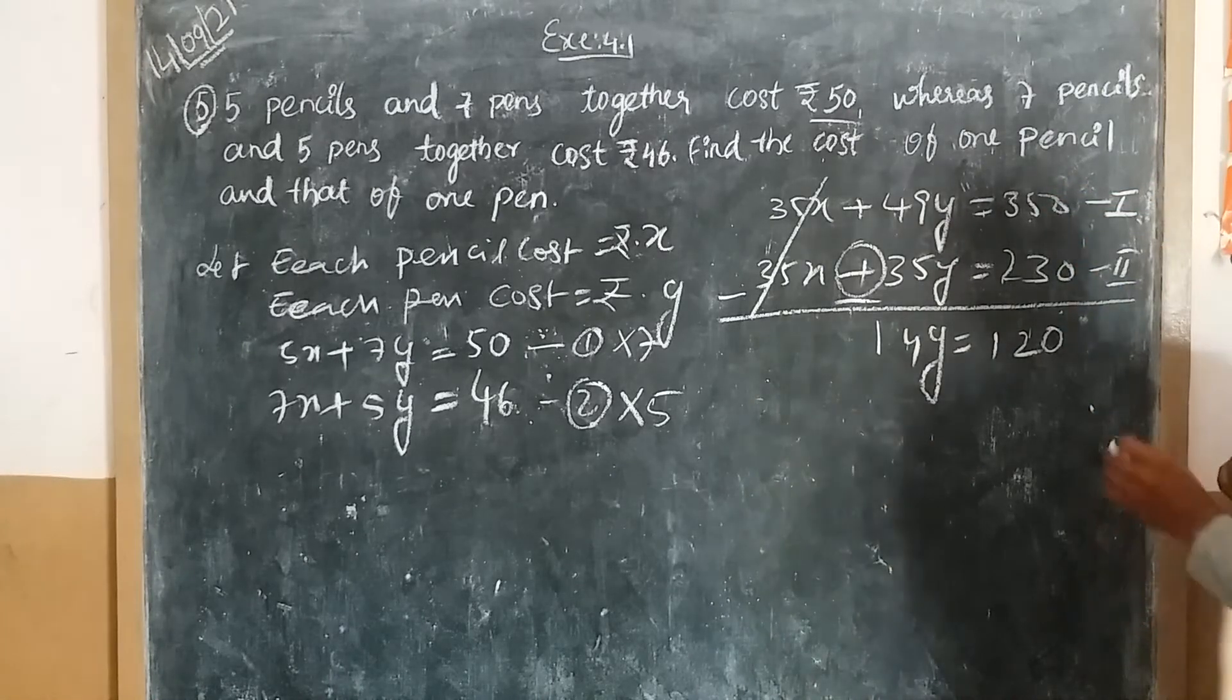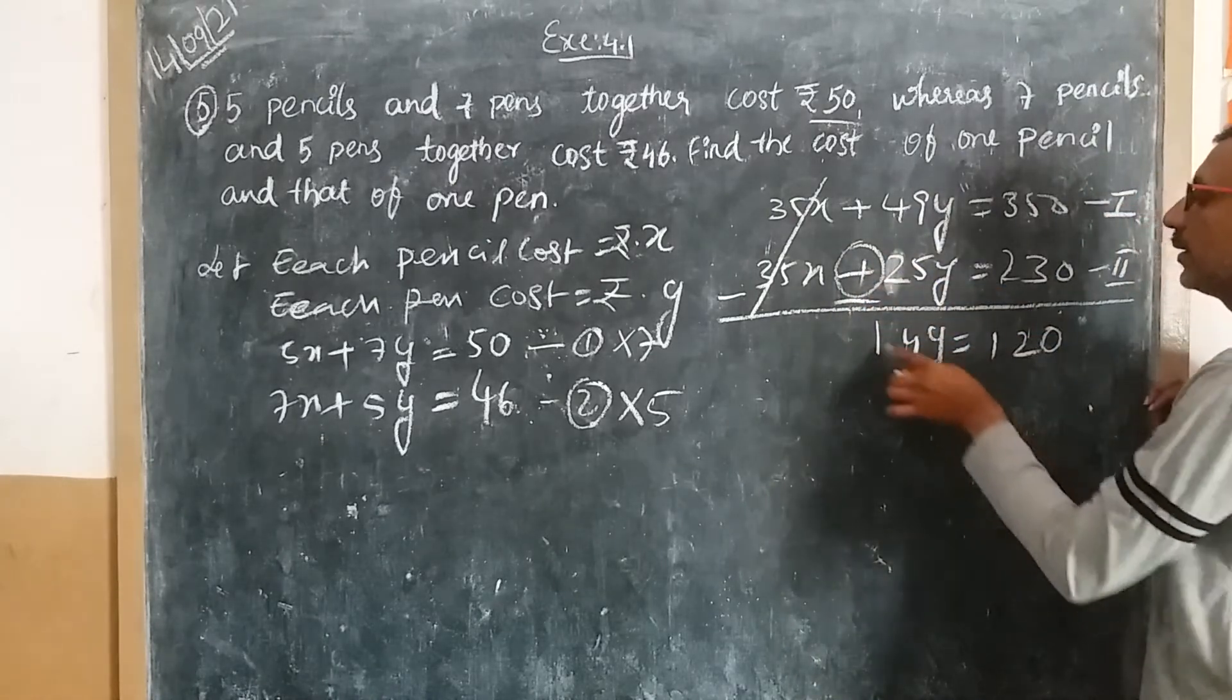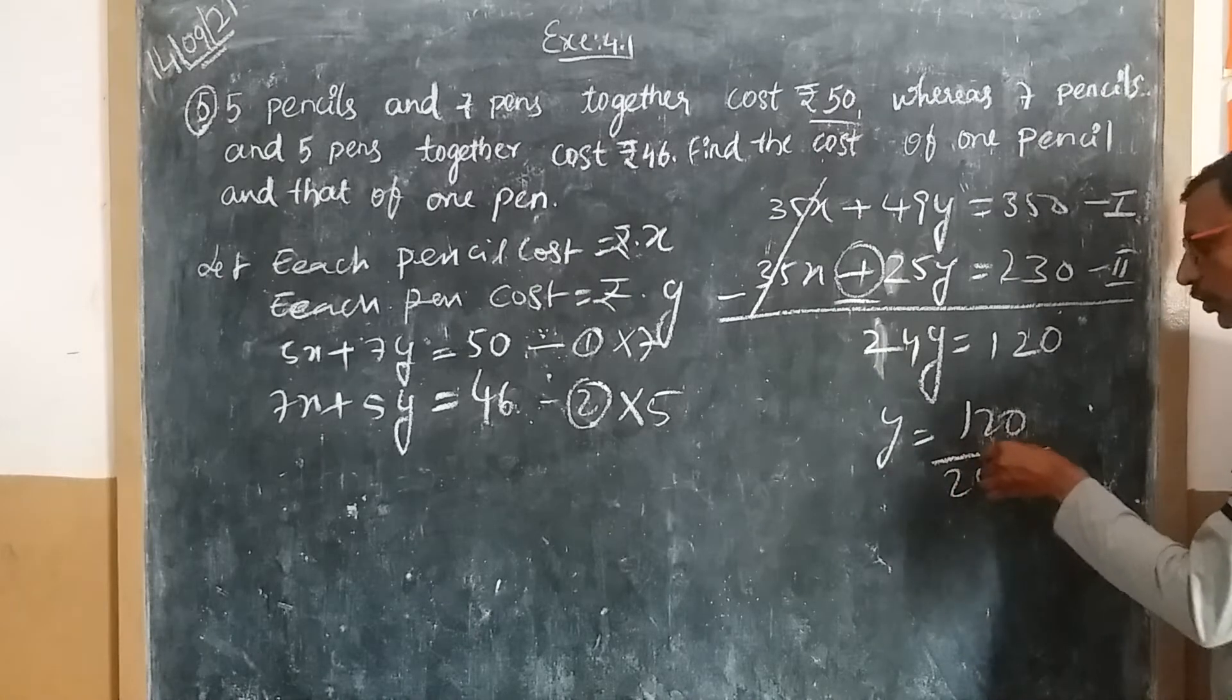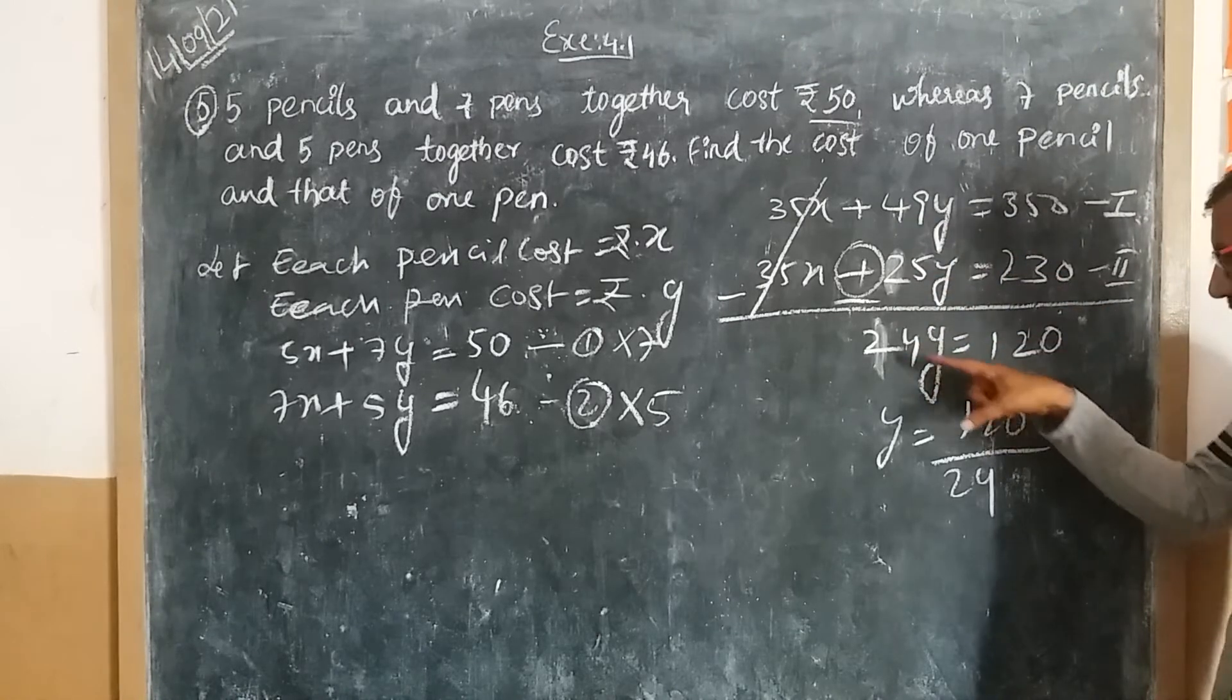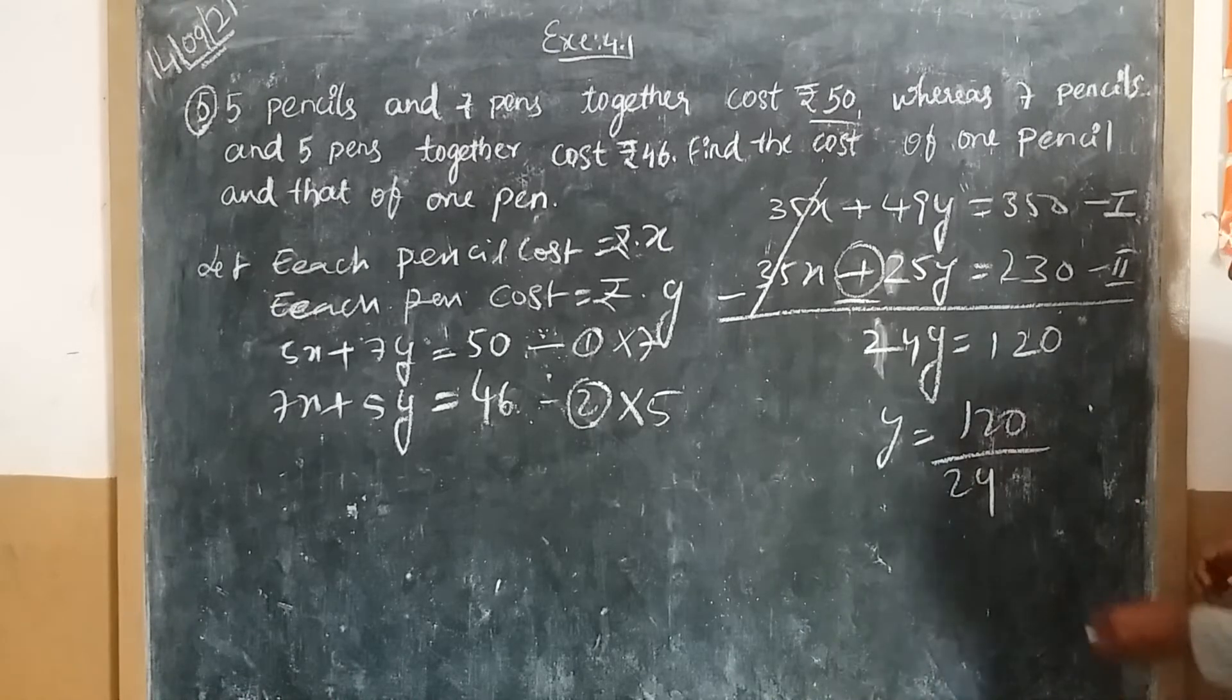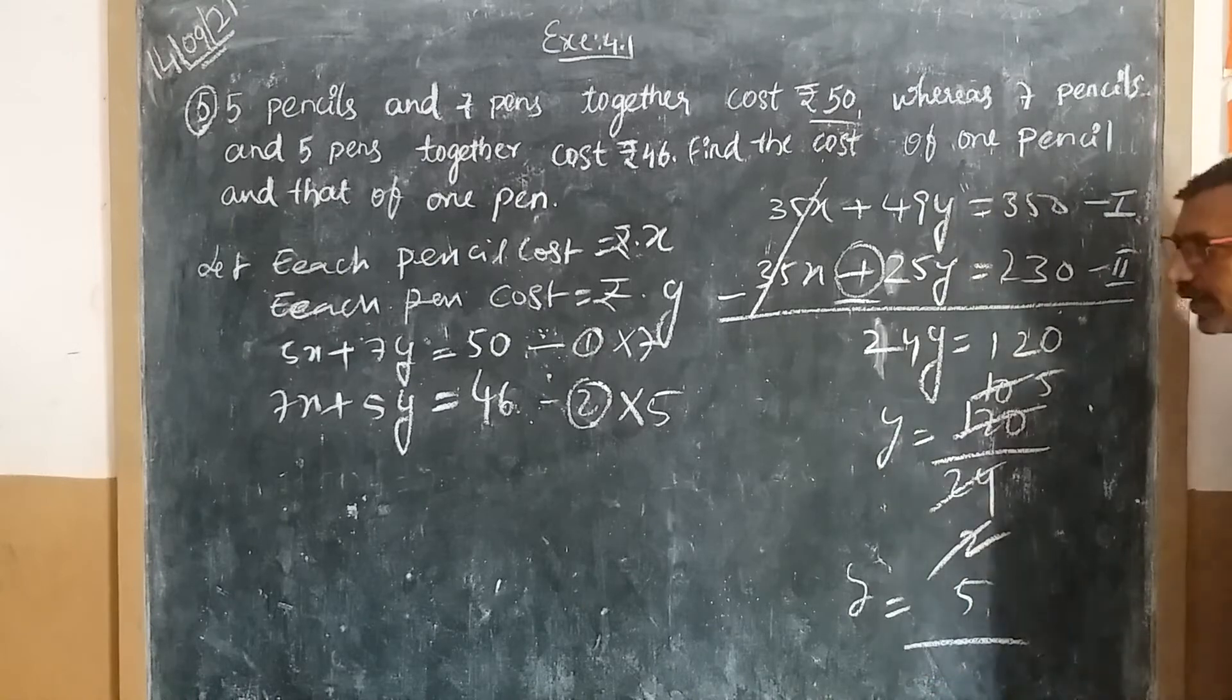49 minus 25 is 24. So 24y = 120. Dividing both sides by 24, y equals 120 divided by 24, which gives y = 5. Therefore y equals 5 rupees. What is y? Each pen costs 5 rupees.